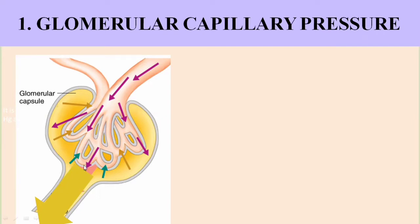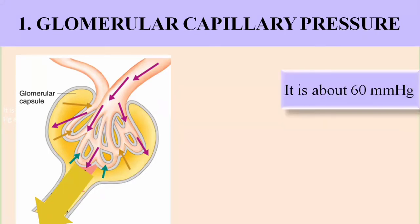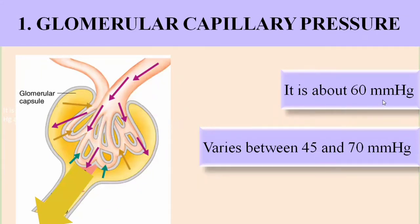The glomerular capillary pressure is about 60 mmHg (millimeters of mercury). This value varies and falls in the range of 45 to 70 mmHg. For normal capillary functioning, this pressure will always be present and will vary between 45 to 70 mmHg. This is the favoring pressure for glomerular filtration, as the filtrate is formed because of it.